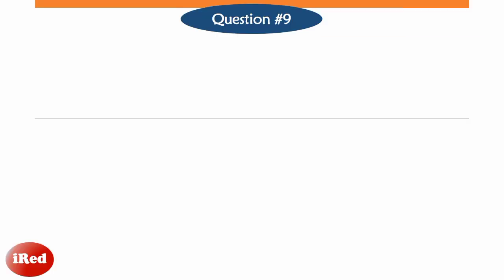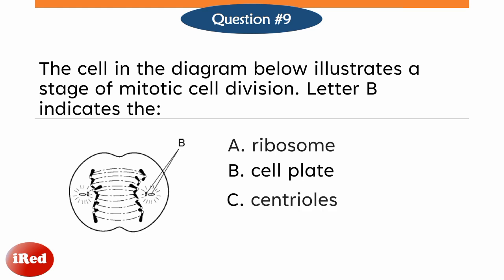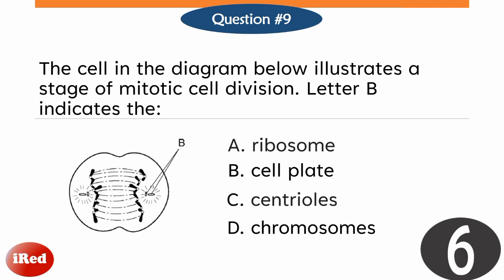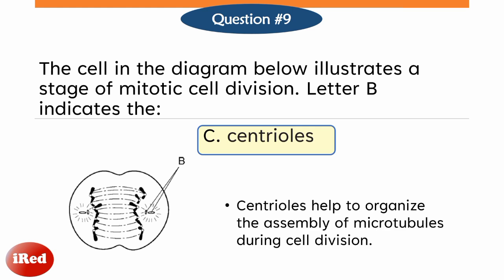Number nine. The cell in the diagram below illustrates a stage of mitotic cell division. Letter B indicates the: letter A, ribosome; letter B, cell plate; letter C, centrioles; or letter D, chromosomes. The correct answer is letter C, centrioles. Centrioles help to organize the assembly of microtubules during cell division.